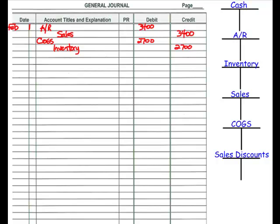For this transaction, I'll put the terms of sale in the explanation: 2% 10 days, net 30. That means if a customer pays the invoice within 10 days, they get a 2% discount; otherwise, they have to pay the full amount of $3,400 within 30 days. The question also mentions the FOB point — FOB destination — which means ownership of the goods transfers to the buyer at the destination, so the seller is going to pay for the shipping charges.